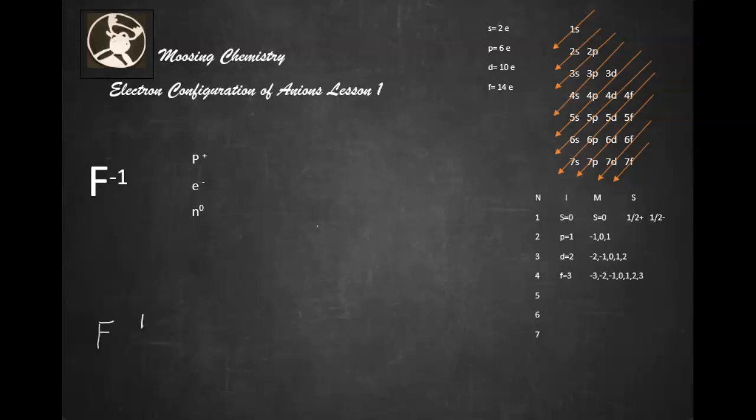And then of course we're going to do our p/n, our protons, our electrons, and our neutrons. So we know that fluorine has an atomic number of 9 and an atomic mass number, or mass number, of 19.